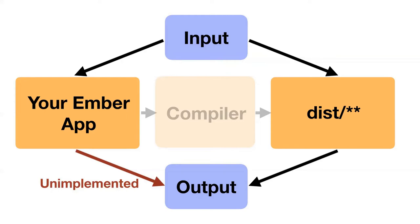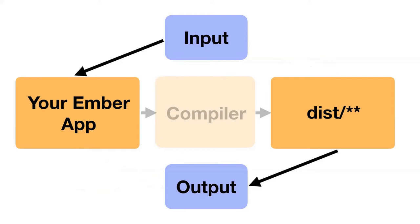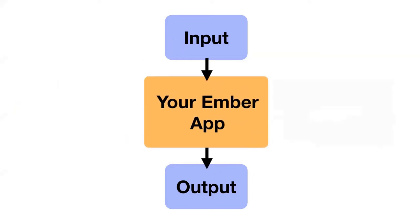Just because that arrow is unimplemented doesn't make it not important. To get from an input to an output, you take your app, compile it, get the compiled output, run that, and then have an output. This is a complicated way to think about the meaning of your program — it means when you're trying to work in your Ember app, you can't just think in the app. You have to think about what the compiler will do with it and what it will mean in the end. The semantics of your program are very entangled with the implementation.